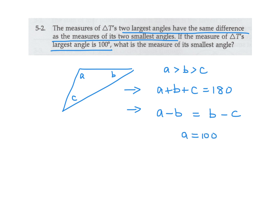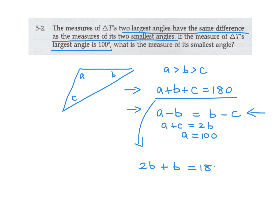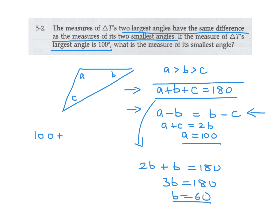From the equation A minus B equals B minus C, I get that A plus C equals 2B. Plugging that into the angle sum equation: 2B plus B equals 180, so 3B equals 180, meaning B is 60. Since A is 100 and B is 60, then 100 plus 60 plus C equals 180, so C equals 20.